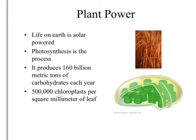From the beginning, life on earth has been solar powered in a sense. All of the energy needed by organisms is harnessed from the sun, and the process by which organisms do this is called photosynthesis. Photosynthesis produces 160 billion metric tons of carbohydrates each year — that's a lot.